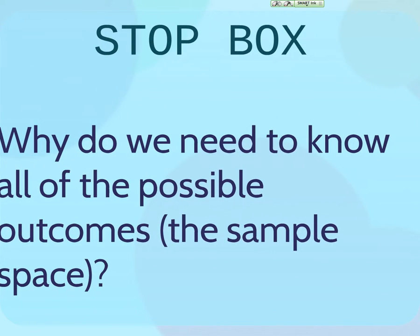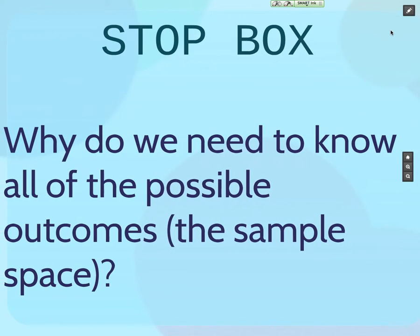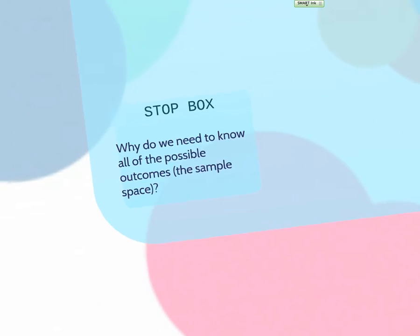But what's the point? Why do we need to know all of the possible outcomes, anyways? So what we'll do when we talk about theoretical probability on Monday, we need to know all of the possible outcomes. That's kind of like the total number of trials, and that's everything that could happen, and then we want to figure out what are the chances of certain things happening. So we need to know all of those outcomes for probability.